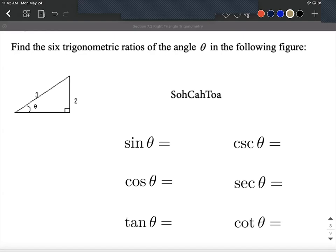Secant, and cotangent. So we're going to base this on SOHCAHTOA, where sine is opposite over hypotenuse, cosine is adjacent over hypotenuse, and tangent is opposite over adjacent.